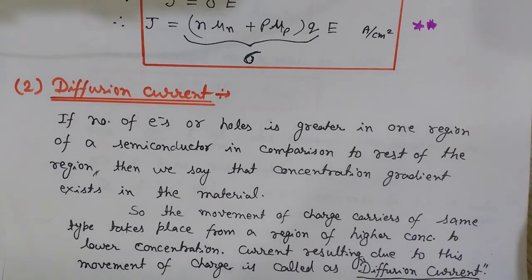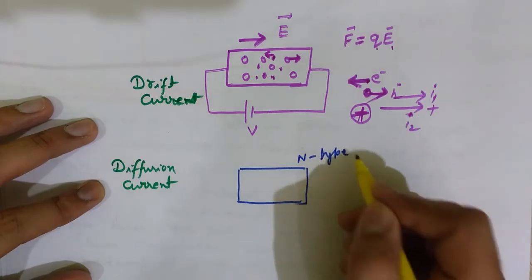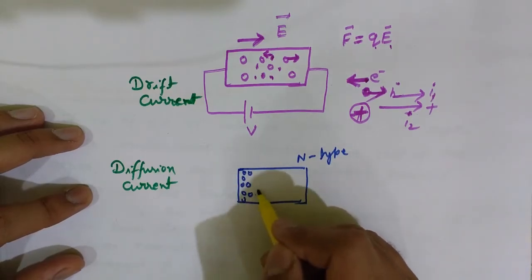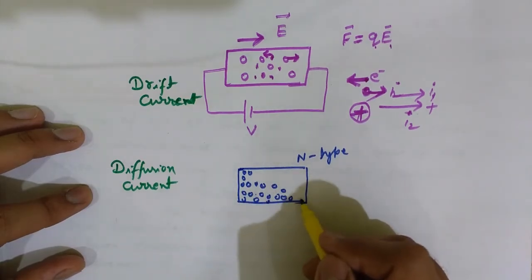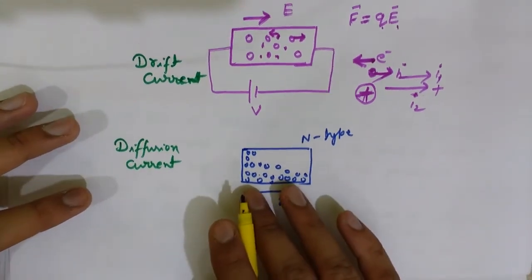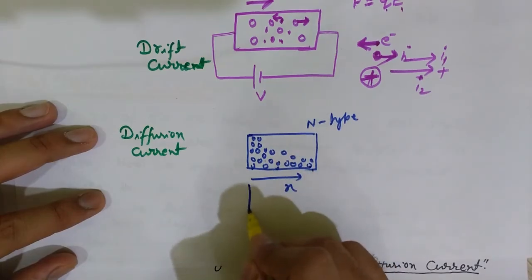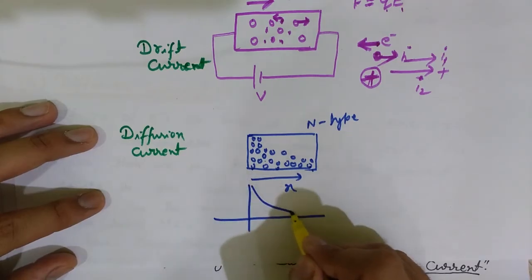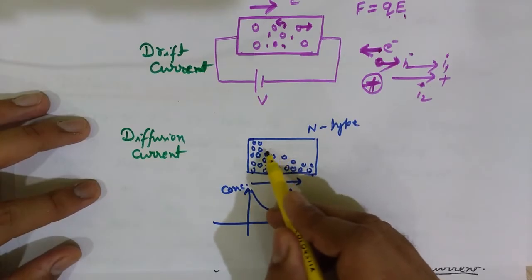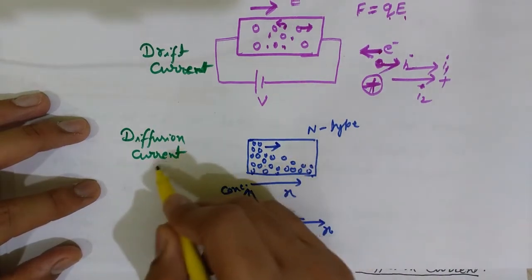Consider an n-type semiconductor where holes are in the minority. If more holes are present on one side and the number of holes decreases as we move toward the right, there is a concentration gradient. The concentration is plotted on the y-axis and distance x on the x-axis, showing concentration decreasing as we move in the x direction. These holes will tend to move from the higher-concentration region to the lower-concentration region, causing diffusion current to flow.